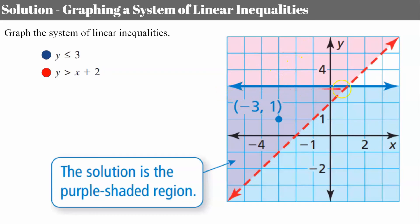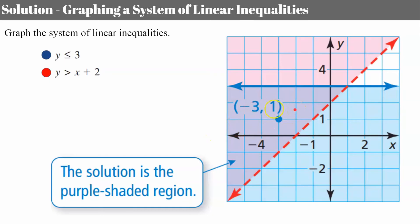You can see this purple area represents the solution. You can check using a test point: when y is 1, one is indeed less than or equal to 3. And when y is 1 and x is negative 1, one is greater than negative 1 — so it checks and verifies this is the solution set for the system of inequalities.